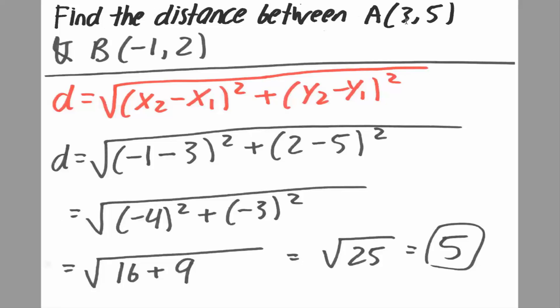So we want to find the distance between point A, which is 3, 5, and point B, which is negative 1, 2.